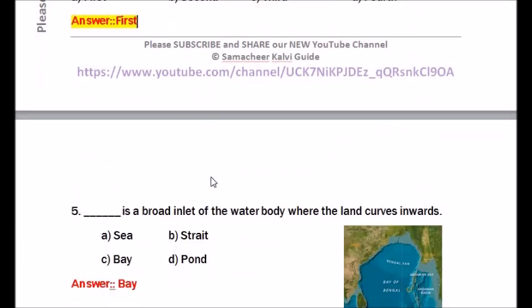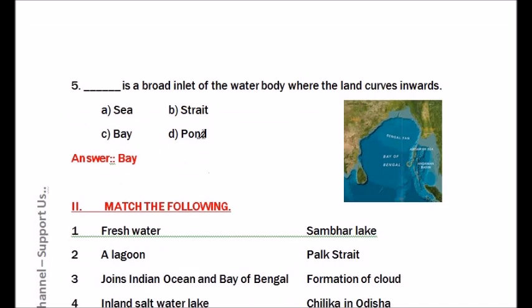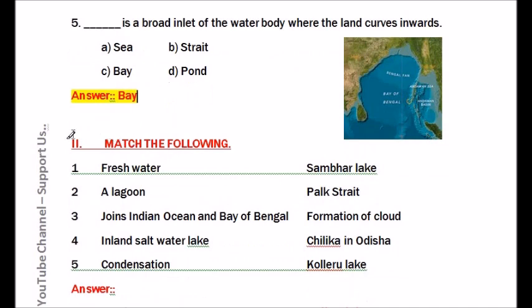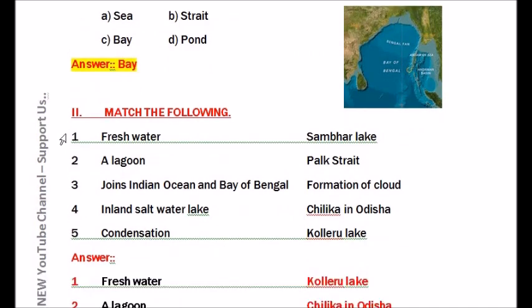Question number five: Dash is a broad inlet of a water body where the land curves inward. Options are: sea, strait, bay, pond. The answer is bay. A bay is a broad inlet of a water body where the land curves inward. You can see the picture — Bay of Bengal.